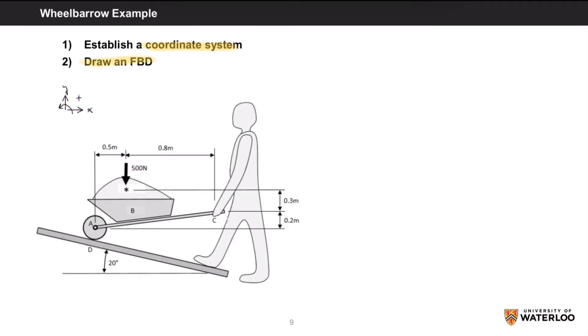Next, we have to draw an FBD for the system. First off, the ramp is not part of the wheelbarrow, but I'll still include it in the drawing to remind us that the wheelbarrow is acting on an incline.